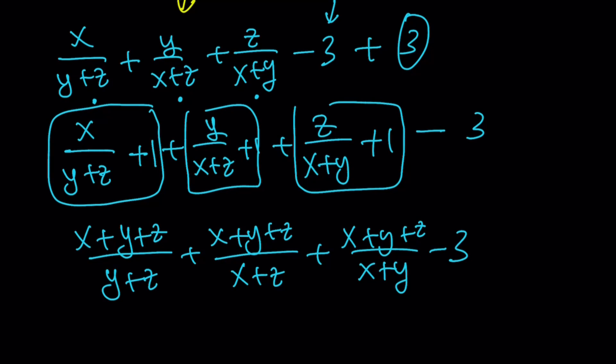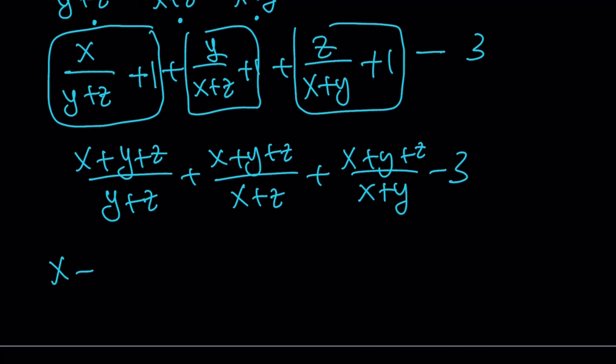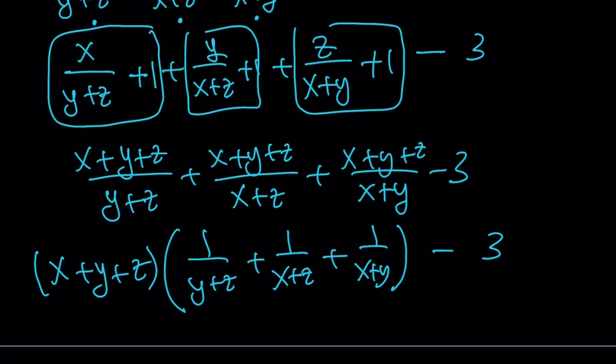And, of course, this is the expression we're trying to evaluate. We still don't know the answer. But here's what we can do. We can take out x plus y plus z, we can factor that out. And inside, we're going to have 1 over y plus z, plus 1 over x plus z, plus 1 over x plus y. And then from the whole thing, I need to subtract 3. So this is what I'm trying to evaluate.